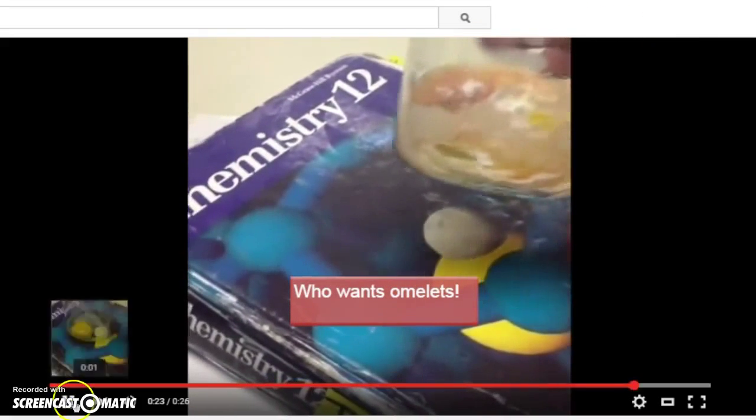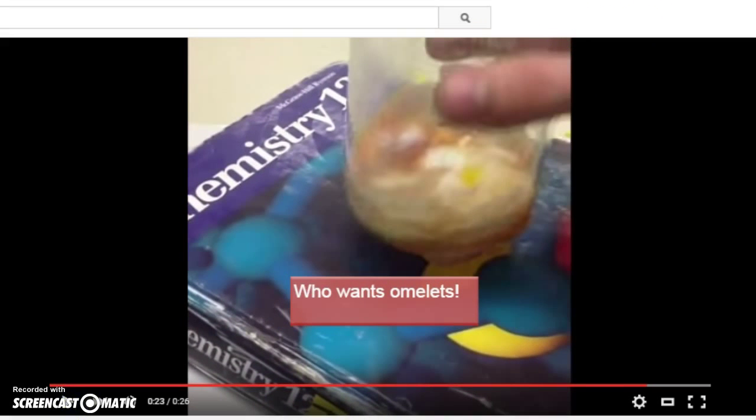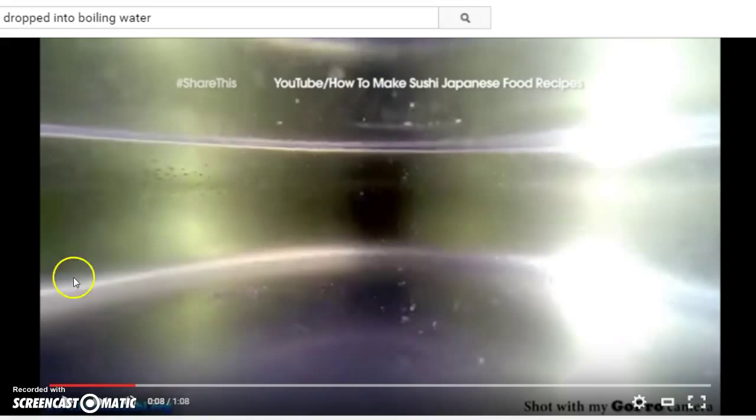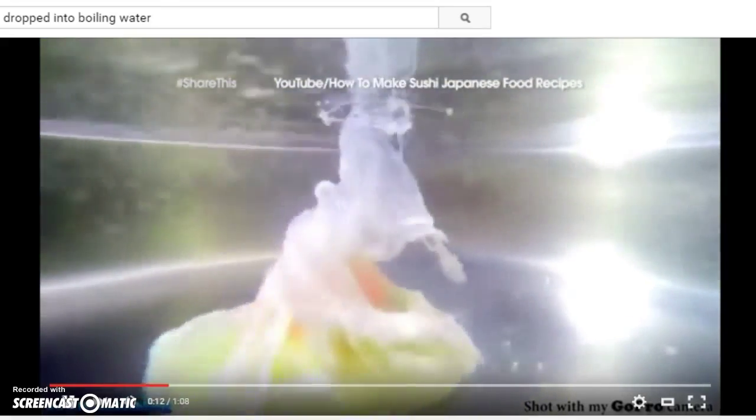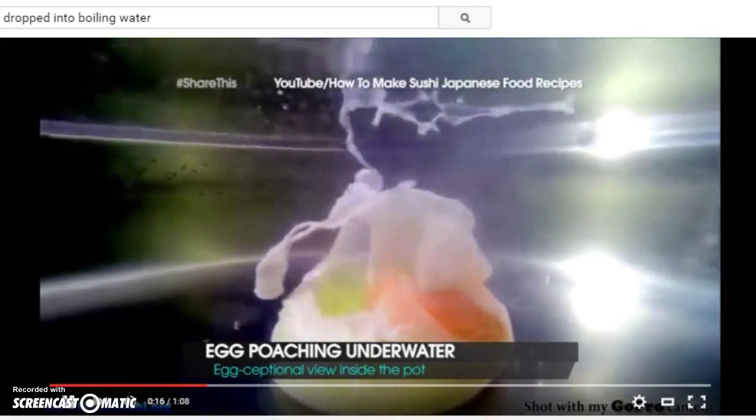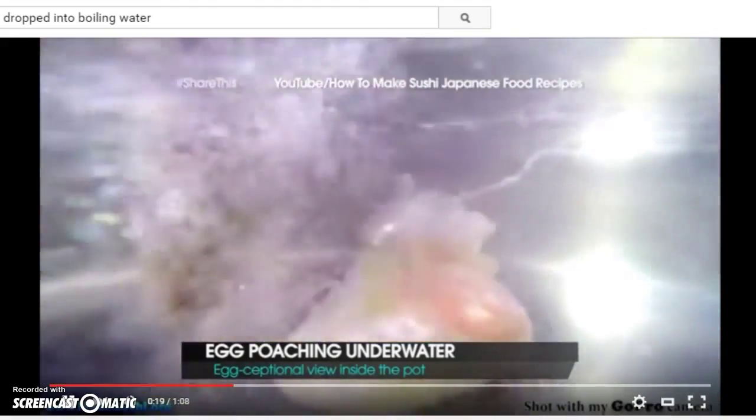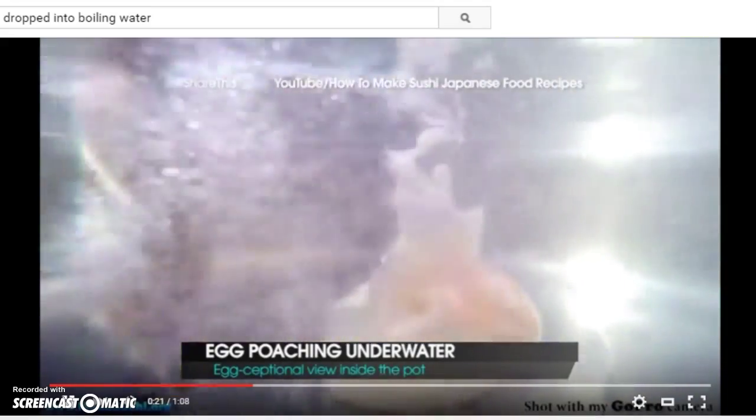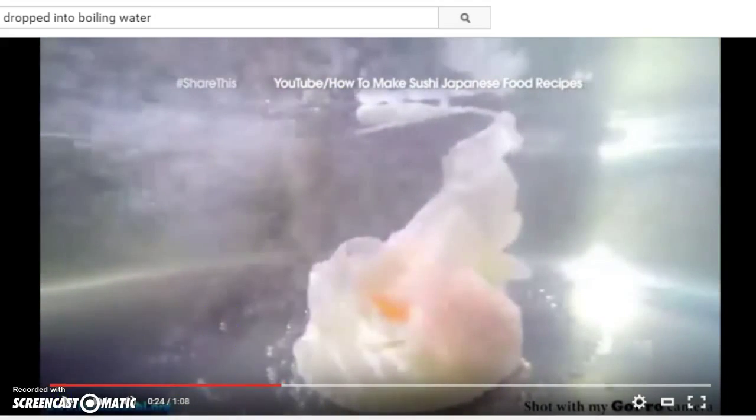And then my third example is with temperature. So I've got some water here. Eggs don't like boiling water, but we're going to drop an egg into boiling water. And as you can see, that has definitely changed its structure, changed its shape. That protein can no longer function like it used to. It doesn't flow like a raw egg used to flow. Now it's pretty clumped up.